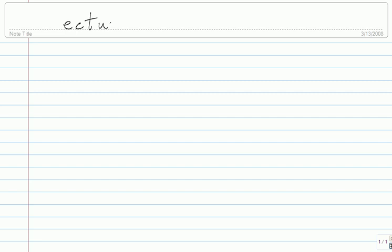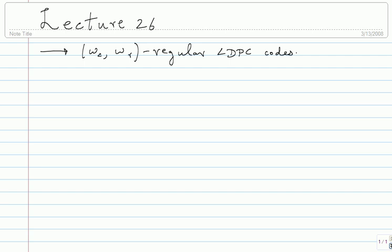This is picture 26. Let me quickly summarize where we are as far as LDPC codes are concerned. We began by looking at (W,C,W,R) regular LDPC codes, and mostly we have been looking at all of these over a binary symmetric channel so far. The decoder we saw was a Gallager decoder — we saw Gallager A decoding, density evolution for Gallager A decoding, and then for the lambda(x), rho(x) LDPC code.